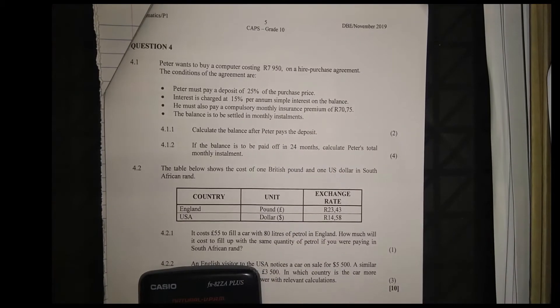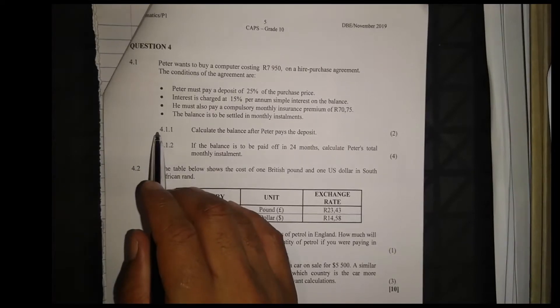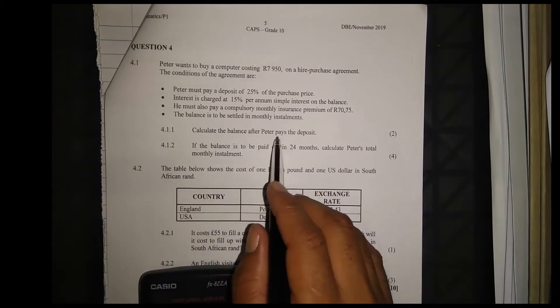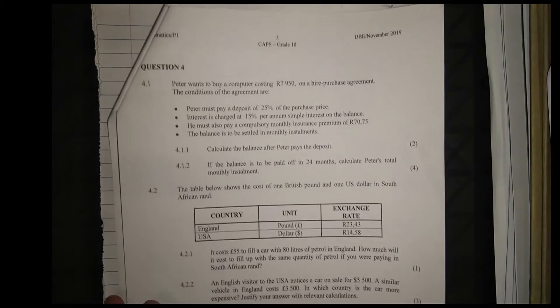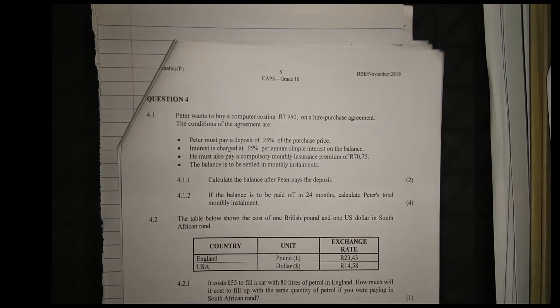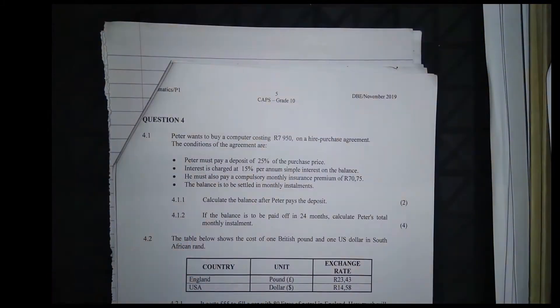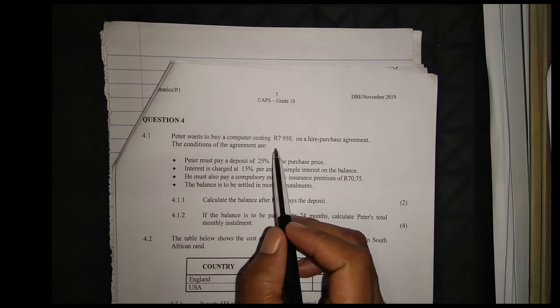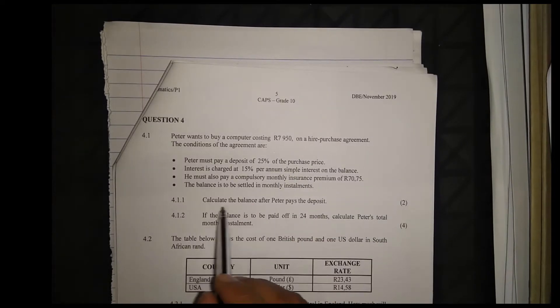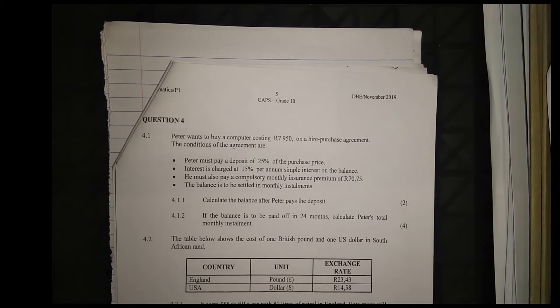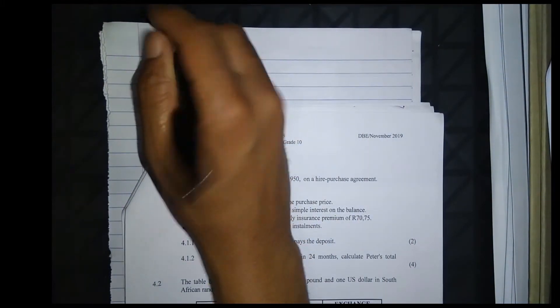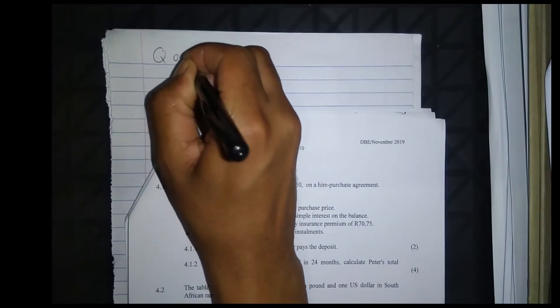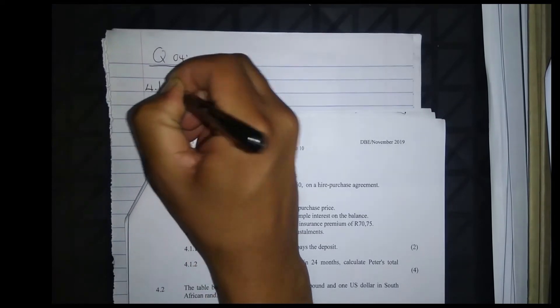Question 4.1.1: Calculate the balance after Peter pays the deposit. So Peter has 7,950 rand, and we need to calculate the balance after Peter pays the deposit.